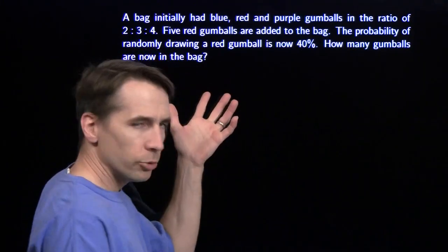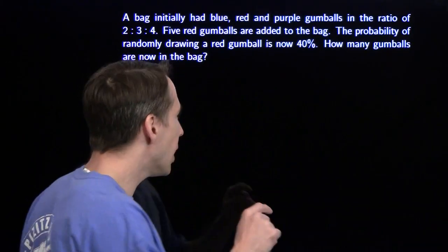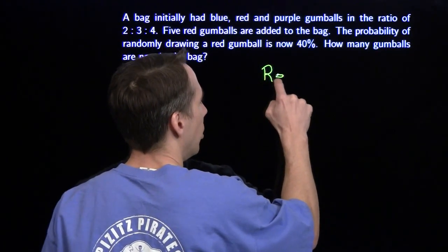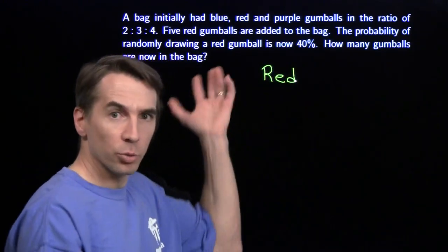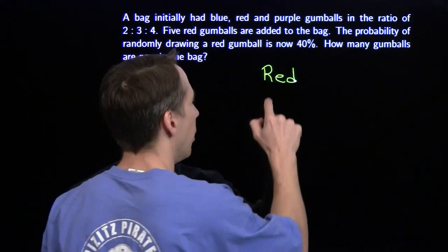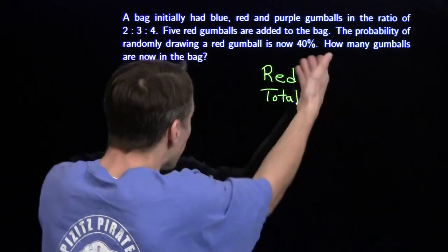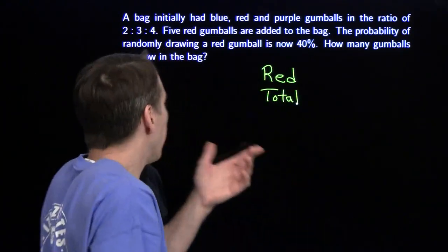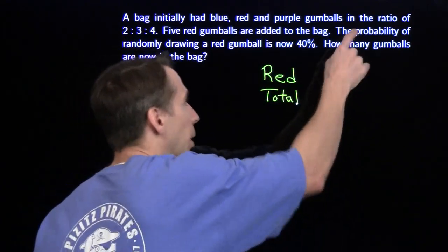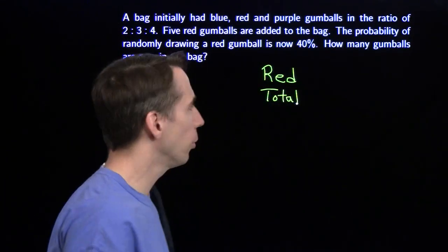I've got all these words. We have to turn it into math, and to do that, we're going to stay organized with a table. We're going to keep track of the red gumballs because we're given a lot of information about them. We're also going to keep track of the total number of gumballs, because that's what we're asked for at the end, and ratios and probabilities usually involve the total as well.